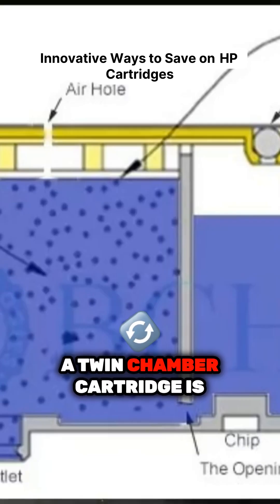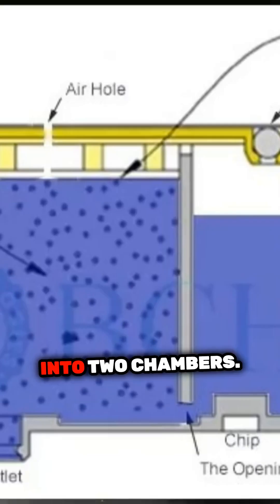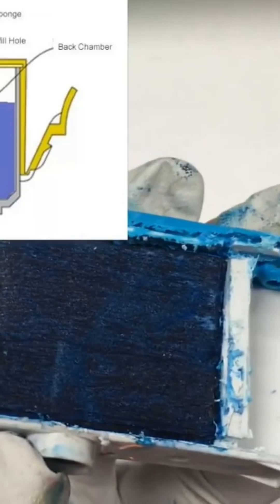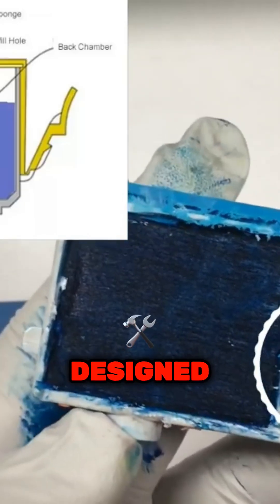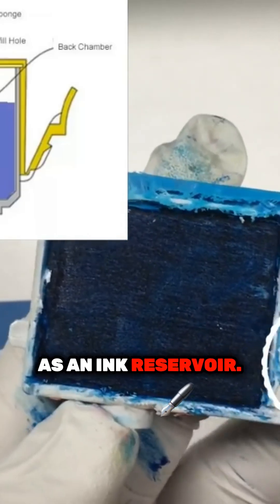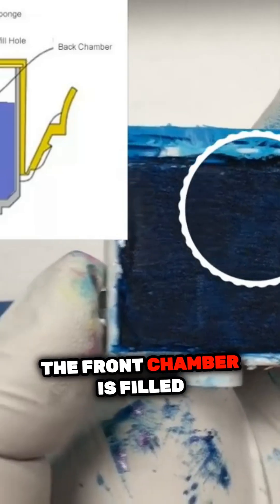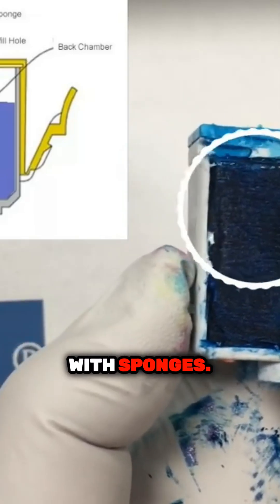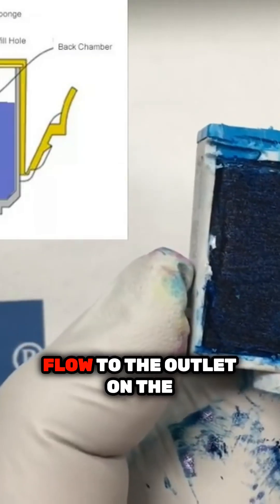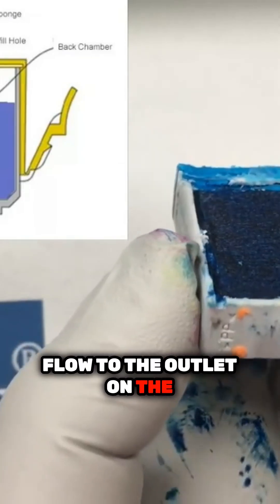A twin-chamber cartridge is divided into two chambers. The back chamber is designed as an ink reservoir. The front chamber is filled with sponges. The sponge regulates the ink flow to the outlet on the bottom.